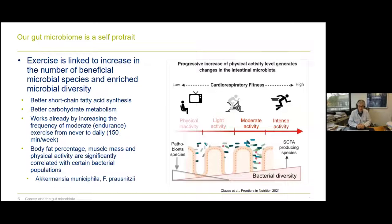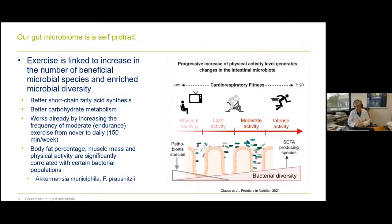Our microbiome is really a self-portrait of ourselves. For example, exercise is linked to an increase in beneficial microbiome species and enriched microbiome diversity — better short-chain fatty acid synthesis and better carbohydrate metabolism. This works by increasing the frequency of moderate endurance exercise, in this case 150 minutes per week. That's not too much — if you take the stairs instead of the elevator, you might already reach 150 minutes per week.